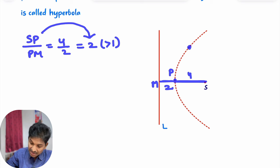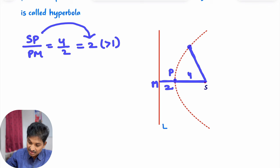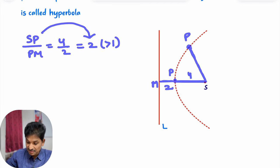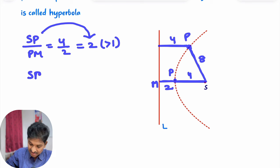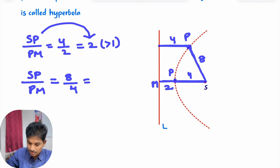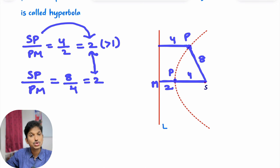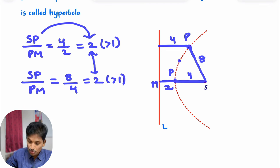Suppose I take another point P. What condition will it satisfy? This is just an example — I am randomly explaining what the definition of hyperbola means. Here SP is 8 and PM is 4. SP by PM is 8 by 4, which is also 2. See the ratio is constant — here also 2. Ratio is constant and that constant is greater than 1.